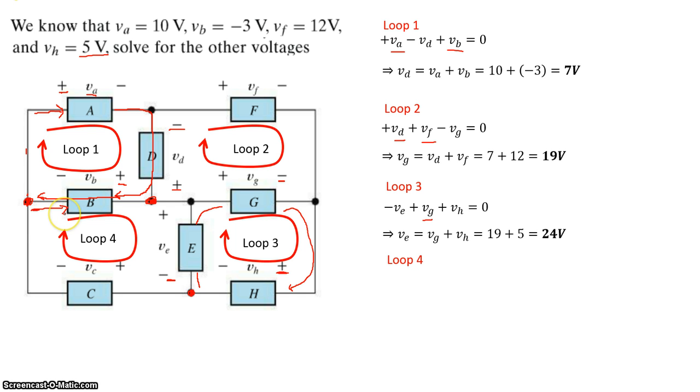As I walk through, I first encounter a negative sign for VB, so minus VB. Then as I walk down, I see the positive sign for VE. As I walk further, the next sign I encounter is a positive sign, and then VC. And then I get back to the original start of the loop.